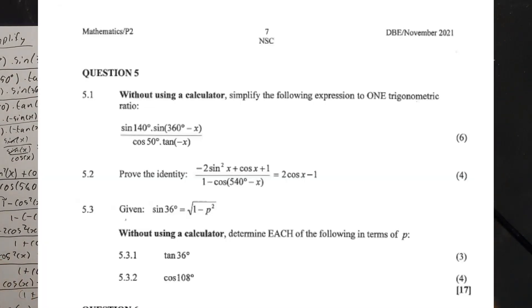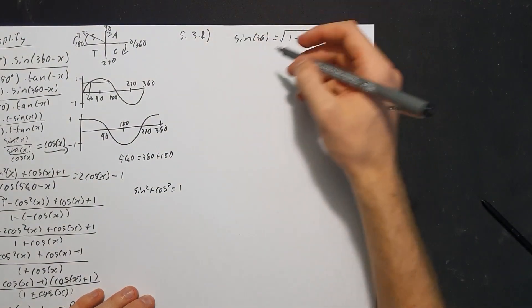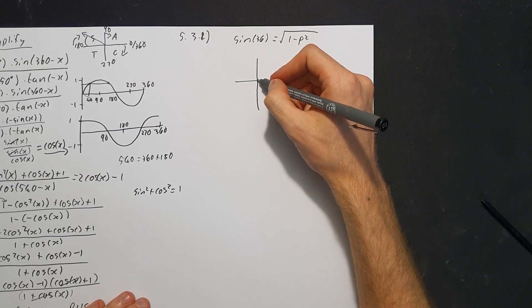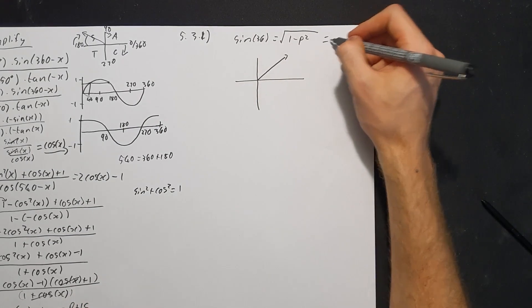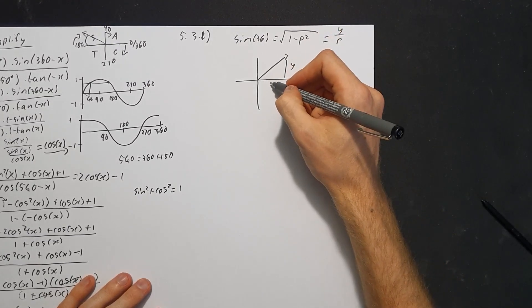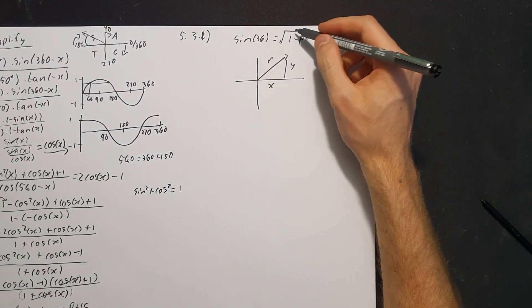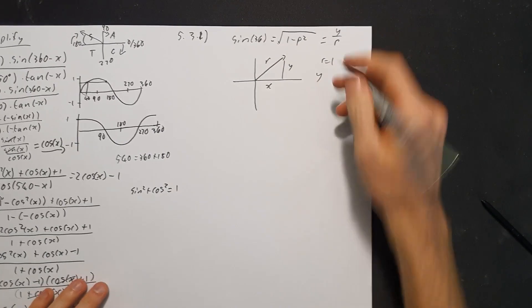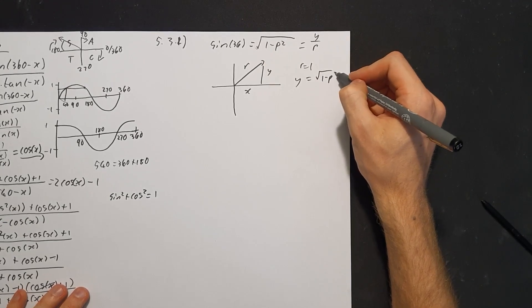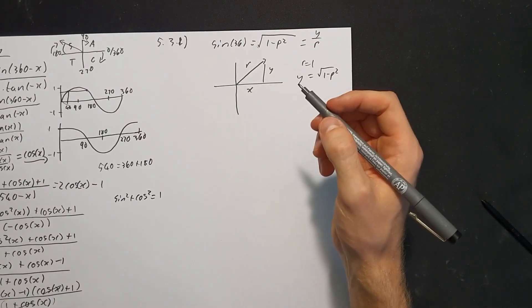Question 5.3: given that sine of 36 equals the square root of (1 minus p squared), calculate without a calculator. 5.3.1: tan of 36. This is a nice question — very important, we need to draw a triangle. Since 36 is in the first quadrant, sine equals opposite over hypotenuse (y over r), so r equals 1 and y equals the square root of (1 minus p squared).